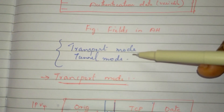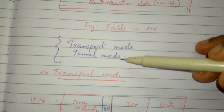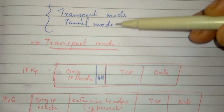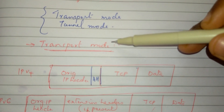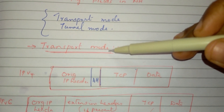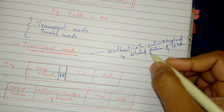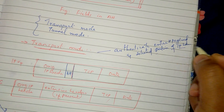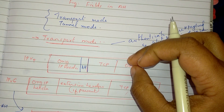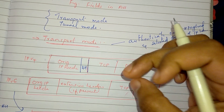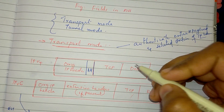AH has two modes: transport mode and tunnel mode. In transport mode, it authenticates the IP payload and the IP header — it authenticates selected portions of the IP header.